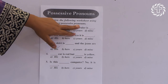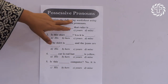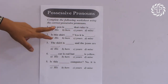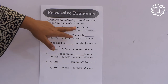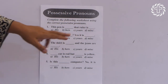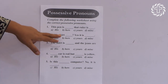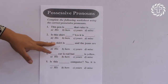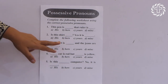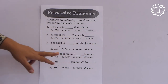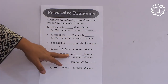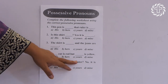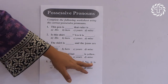Home assignment: Complete the following worksheet using the correct possessive pronouns. This is dash — that ruler is dash — choose the correct words. Second: Is this shirt dash? Yes, it is dash. The skirt is dash and the jeans are dash. Dash car is red but dash is yellow. Number five: Is this dash computer? No, it is dash.